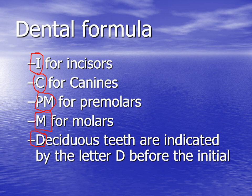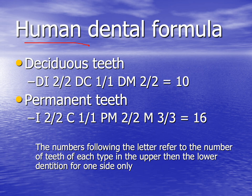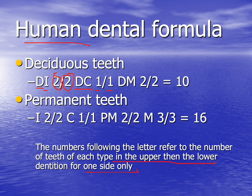The human dental formula for the deciduous teeth uses D before each letter. We have two incisors in the upper jaw on one half and two in the lower jaw on one half, because the numbers refer to the count of each tooth type in the upper and then lower dentition for one side only. We have one deciduous canine upper and one lower per side, and two molars upper and lower per side, giving us 10 teeth on each half. For the permanent teeth: two upper and two lower incisors, one upper and one lower canine, two upper and two lower premolars, and three upper and three lower molars — giving us 16 teeth per half.